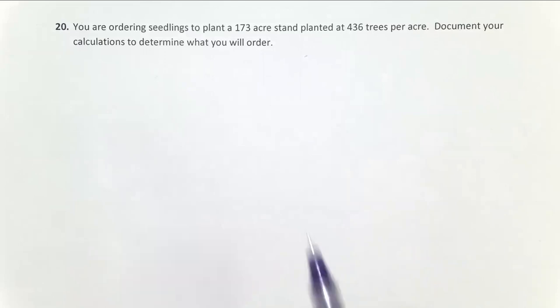In this problem, we know we have a 173-acre stand. We know we're trying to get 436 trees per acre planted, so maybe it's a 10-by-10-foot spacing. And we want to know how many seedlings we should order from the nursery.